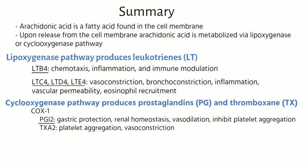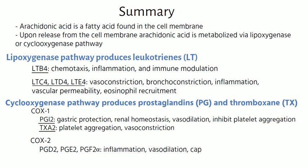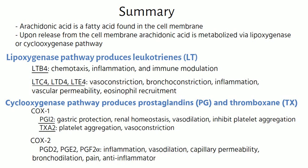The products of the COX-2 pathway are prostaglandin D2, prostaglandin E2, and prostaglandin F2-alpha. These prostaglandins promote inflammation, vasodilation, capillary permeability, bronchodilation, and pain, and can also play an anti-inflammatory role.